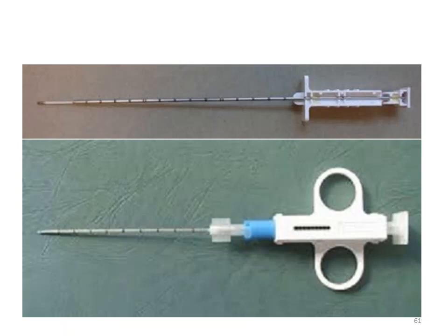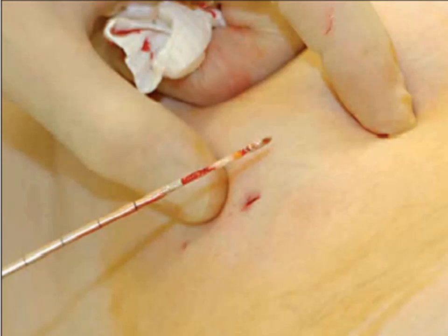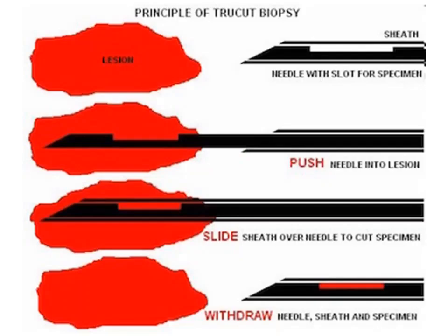Here is the core needle (Tru-Cut) biopsy being performed. Under local anesthesia, we nick the skin and take five to six cores for histopathology. The device has a sheath and an inner needle with a groove. We push the needle into the tumor, advance it, slide the sheath over, and withdraw the needle with the sheath and tissue. The groove is where the biopsy tissue is captured.